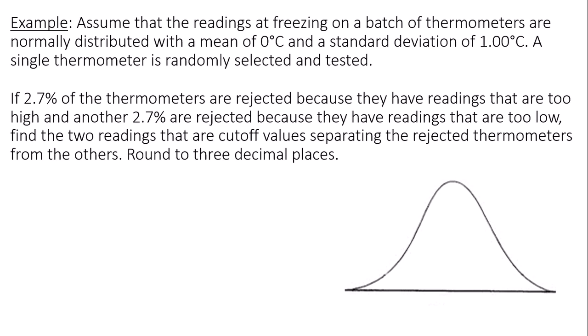A single thermometer is randomly selected and tested. If 2.7% of the thermometers are rejected because they have readings that are too high, and another 2.7% are rejected because they have readings that are too low, find the two readings that are cutoff values separating rejected thermometers from the others. We'll round to three decimal places in this case.